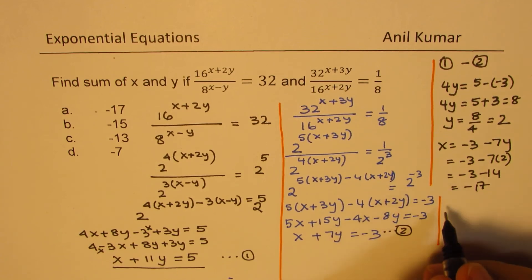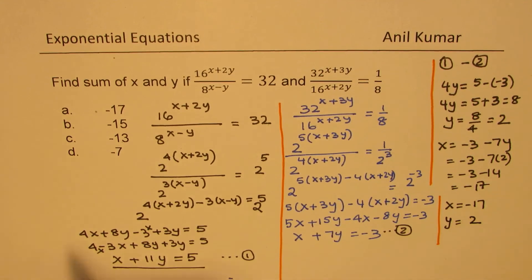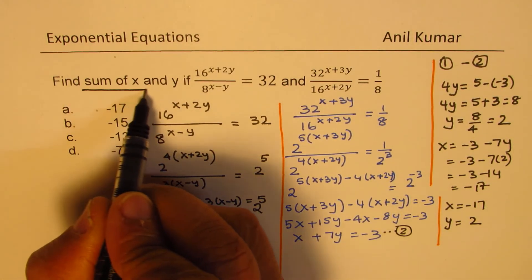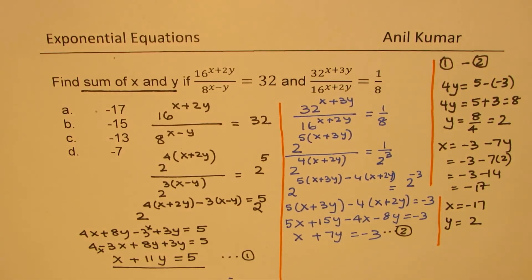So minus 17 is the value of x. So what we get here is x equals minus 17, y equals 2. We need to find sum of x and y.